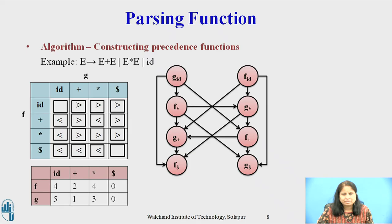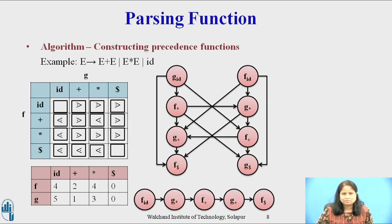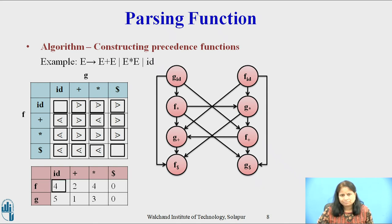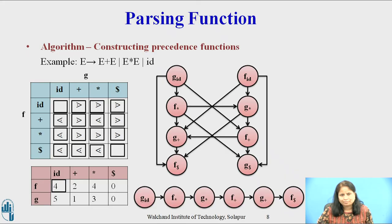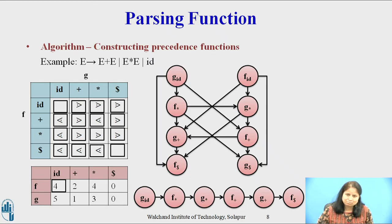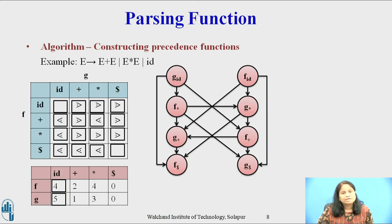Now consider how to obtain the entries in the matrix. The length of the longest path from f(id) to f(dollar) is shown here, so the entry for f on id in the matrix is 4. The length of the longest path from g(id) to f(dollar) goes: g(id) to f(star), f(star) to g(star), g(star) to f(plus), f(plus) to g(plus), and g(plus) to f(dollar). So the entry for g on id in the matrix is 5.